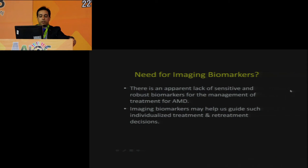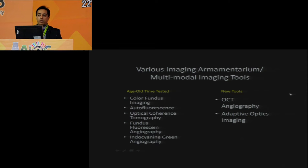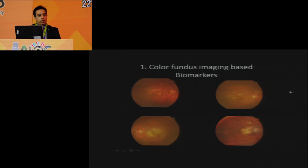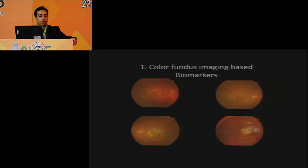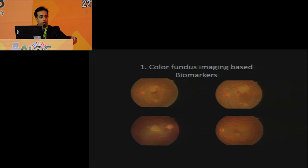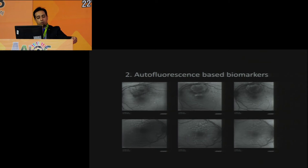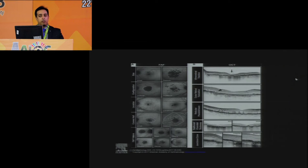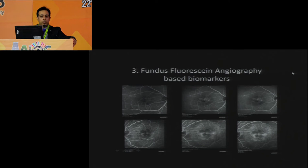There is an apparent lack of sensitive and robust biomarkers for AMD management. We probably need more customized guidelines rather than general ones, because every patient and every eye behaves differently. Tools include color pictures for interpreting drusen and progression to wet AMD, and autofluorescence imaging, where hyperfluorescent areas predict future atrophy progression.